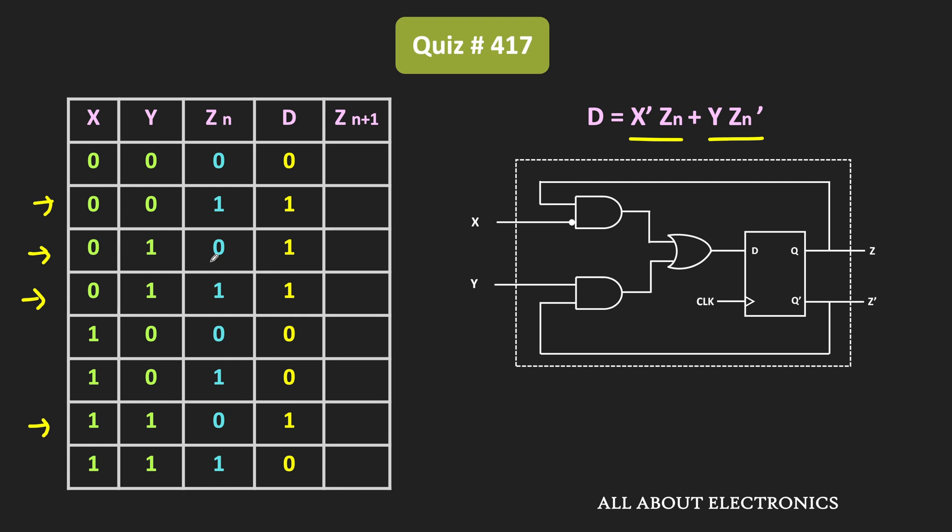This will be the input to the D flip-flop. As you know, the output of the D flip-flop is the same as the input, so for the given inputs, the output of the D flip-flop is the same. Now let us concentrate on the first three columns — X, Y, and Zn — as well as the last column. Zn represents the present state of the flip-flop, while Zn+1 represents the next state.